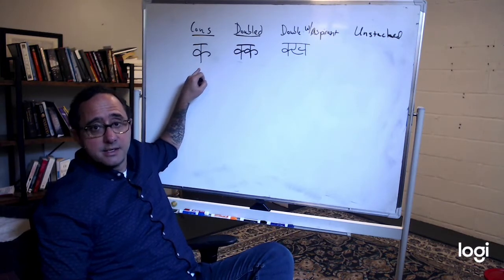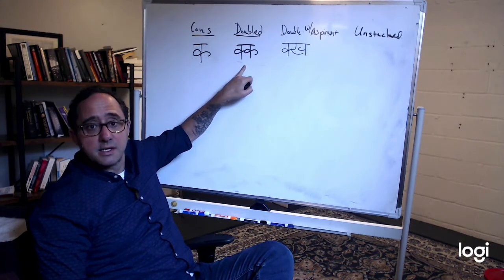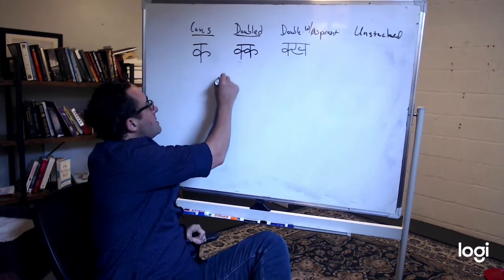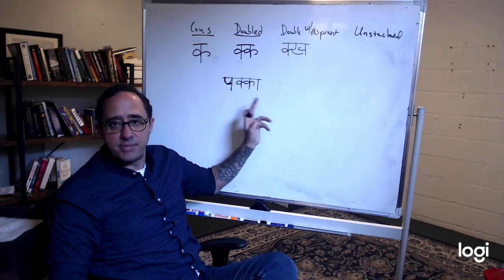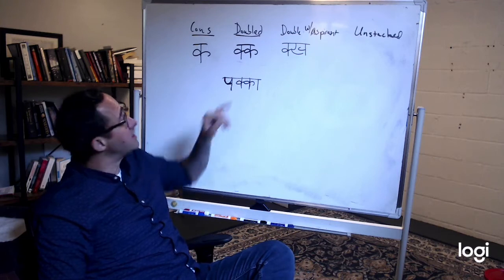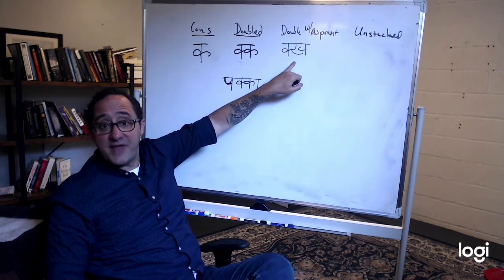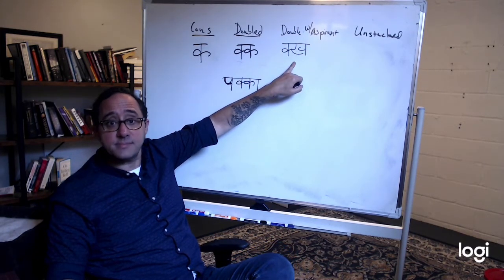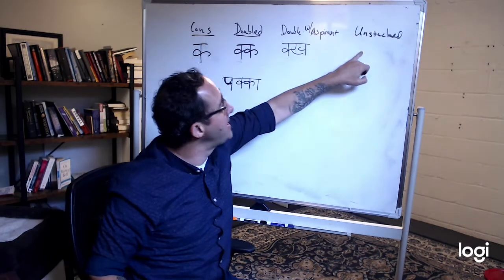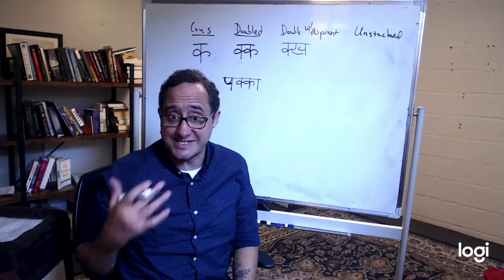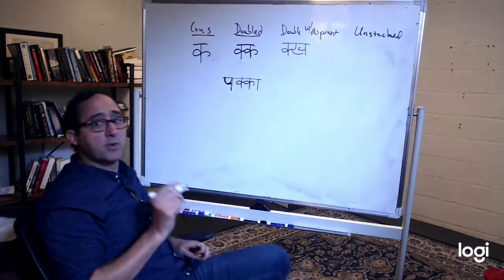So, consonant K. Doubled, K, like Buck-gah, Buck-gah, Buck-gah. Notice I'm holding it longer. Doubled K. I'm going to double it with the aspirated version. K, K, K, K, K. Then I'm going to, if it was stacked, I would unstack it. So, let's try it with one that's stacked.